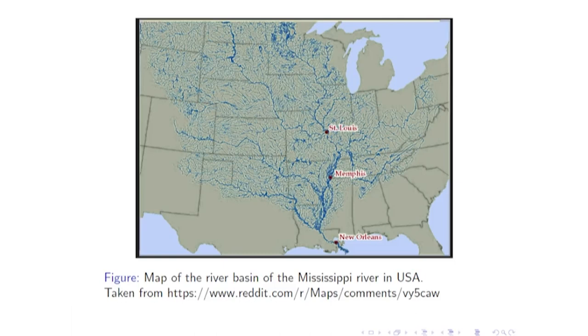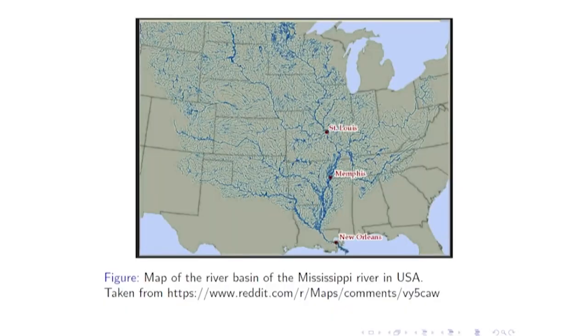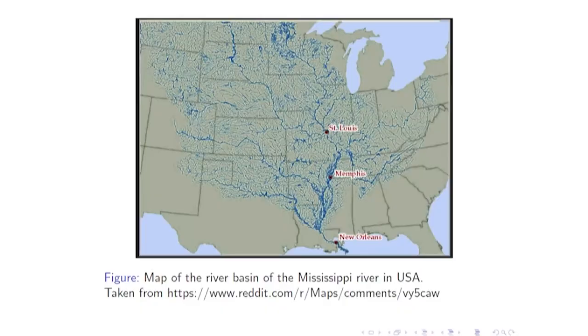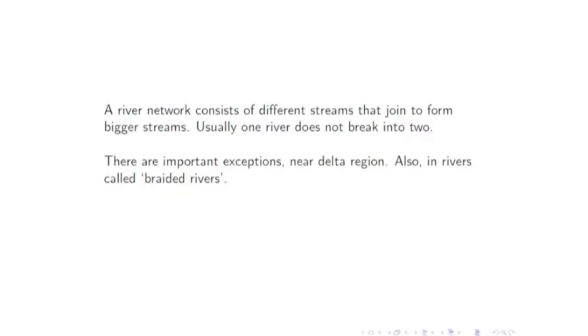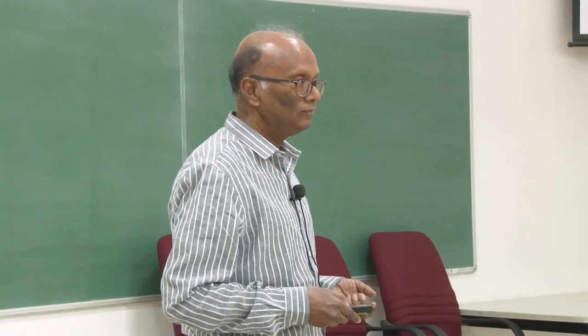Rivers take up a big part of our globe. We should not think of a river as just one stream, but as all the set of streams that put water into it. The river network consists of different streams that join to form bigger streams. Usually a river does not split into two — water joins but doesn't break into two, except near delta regions. There are also rivers called braided rivers, which many students don't know about.